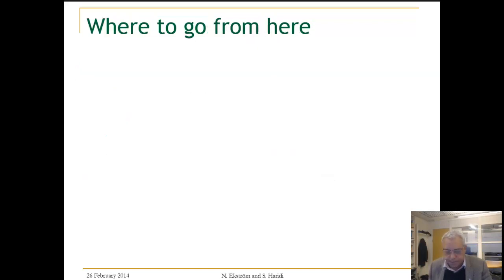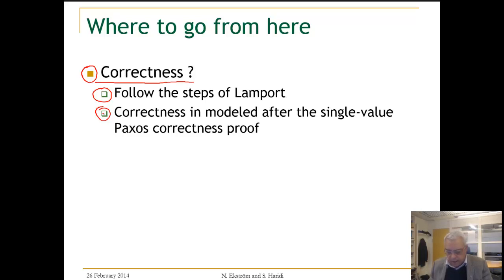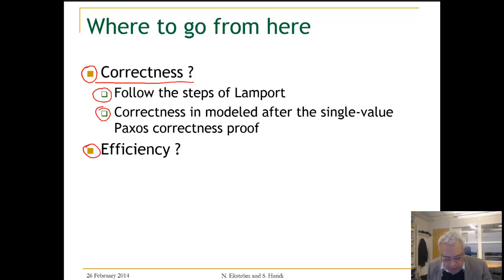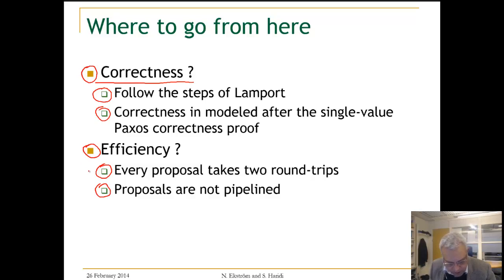Where do we go from here? The first step is to look at the correctness of these algorithms, which can be modeled on the single-value Paxos correctness proof. The second issue is efficiency. Every proposal takes two rounds — a prepare round and an accept round — and you cannot make another proposal until the prepare round finishes, so proposals are not pipelined. These are two things we would like to optimize.